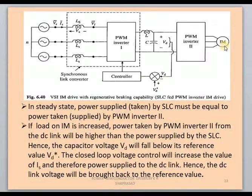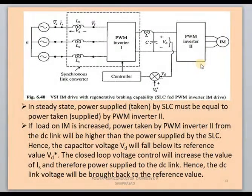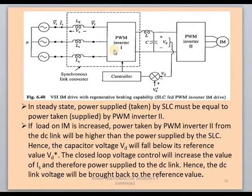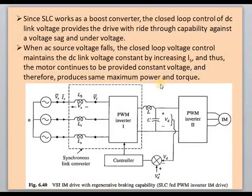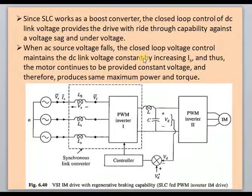Under steady-state operation, PWM Inverter 1 voltage and PWM Inverter 2 voltage are equal, so no net power flows between the two inverters. If there is an increase in induction motor load, PWM Inverter 2 automatically draws more power from the DC link. This unbalanced condition is sensed by the capacitor voltage and compared with the reference; PWM Inverter 1 then automatically adjusts to re-balance the voltages. The SLC also works as a boost converter, balancing voltage sag and under-voltage problems to maintain constant power and torque.